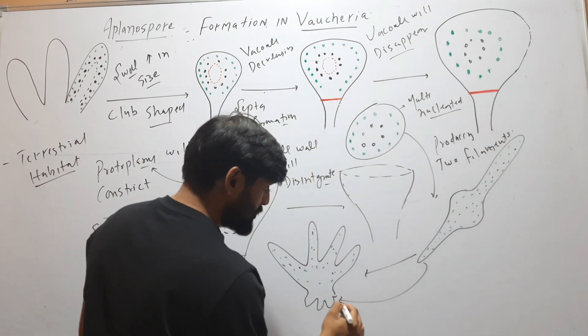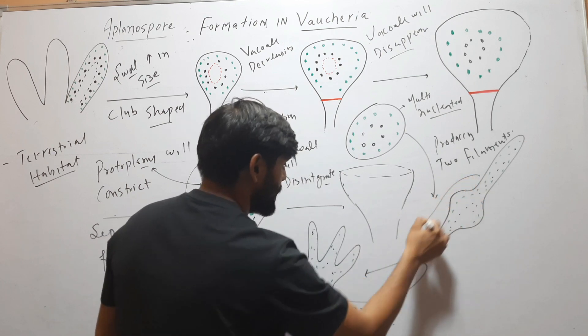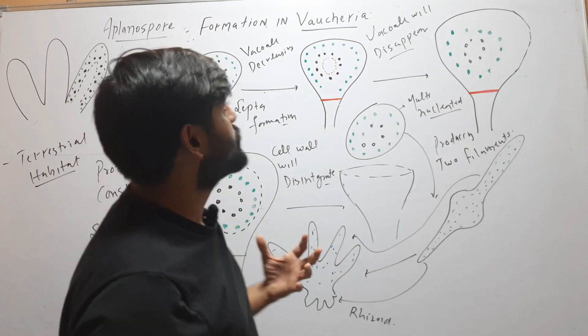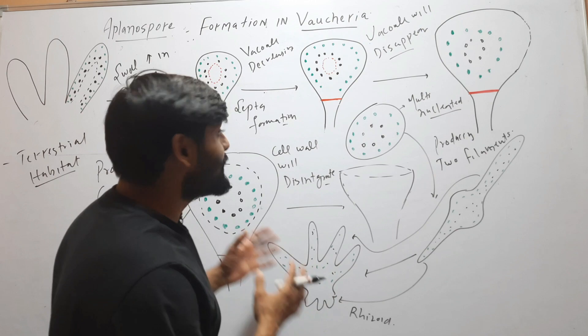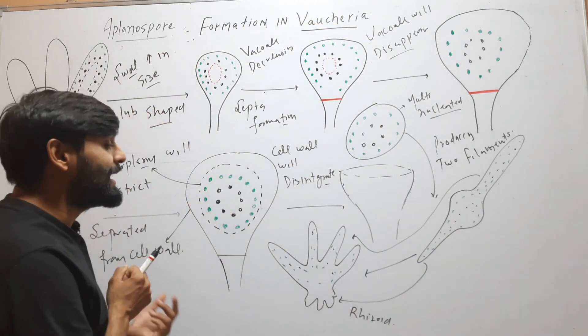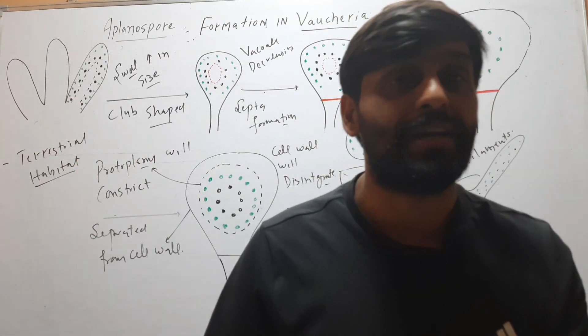One filament forms rhizoids and another filament will form thallus filaments. So this is aplanospore formation in Vaucheria. It is somewhat very similar to zoospore, but the only difference here is that in aplanospore the flagella is absent.